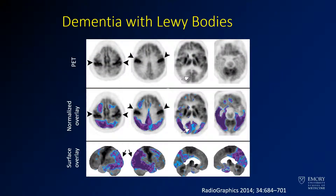In Lewy body dementia, you see areas sparing between the frontal and parietal lobes with involvement of the frontal, parietal, and occipital cortex. The normalized overlay shows involvement of the occipital lobes. Lewy body dementia is one of the only dementias to involve the occipital lobes. There is a form of Alzheimer's which also involves the occipital lobes, but that would be less common.